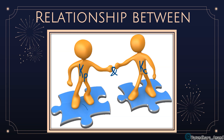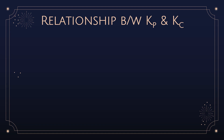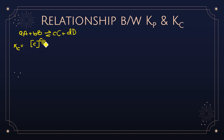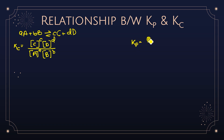Now an important topic: the relation between Kp and Kc — this derivation may be asked. Suppose the equation is aA + bB ⇌ cC + dD. Write Kc = [C]^c·[D]^d / ([A]^a·[B]^b). Write Kp = Pc^c·Pd^d / (Pa^a·Pb^b).